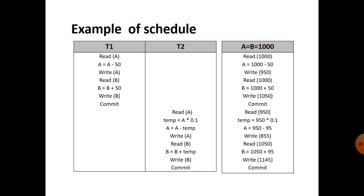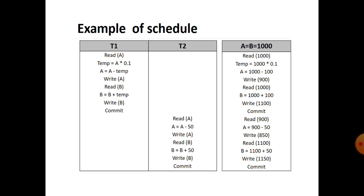We can see an example of a schedule with transaction T1 and transaction T2. The numerical values show the transactions T1 and T2 and the final state. T1 is a separate transaction, T2 is a separate transaction, and the combined process is shown in the third image.